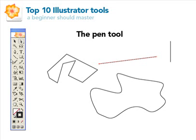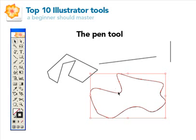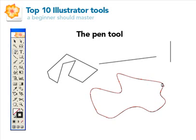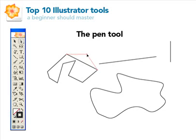The second option for the pen tool is the add anchor points option, and that basically does what it says. For it to work you have to have one of these shapes selected. Click on the add anchor points option and on the lines you'll see a plus sign — that will add anchor points to your shape. You can do it on all the shapes. On the straight lines it's going to be hard to see because it's straight, but that's just if you want to go back and make it a little more dynamic.